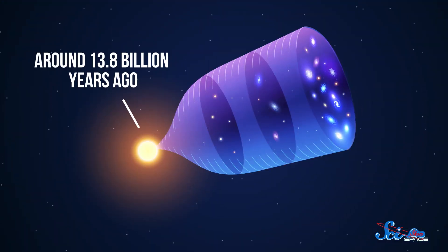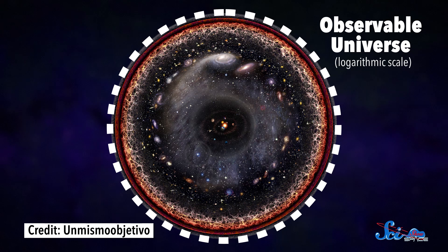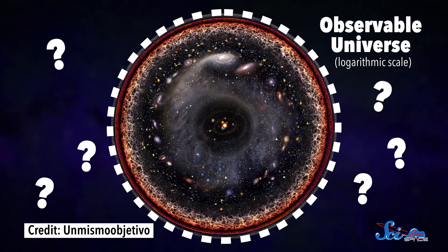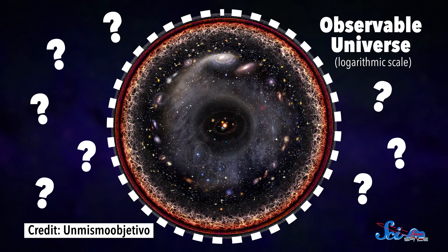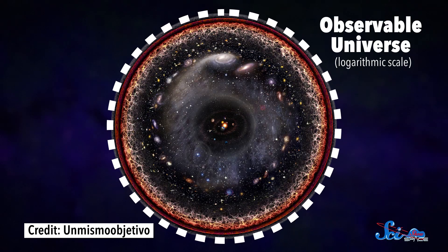And remember, light takes time to travel, so we can only see as far out into space as light can travel in 13.8 billion years. And that's called the observable universe. And we don't really know what's beyond the observable universe, so we don't know for sure whether the full universe is infinite. But the part we can see is definitely a finite size, and that's what matters here.